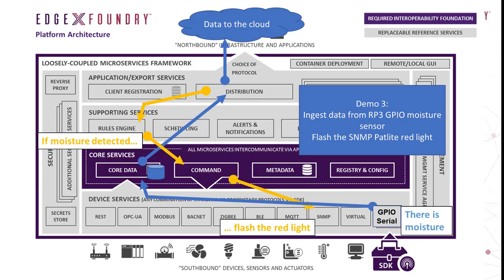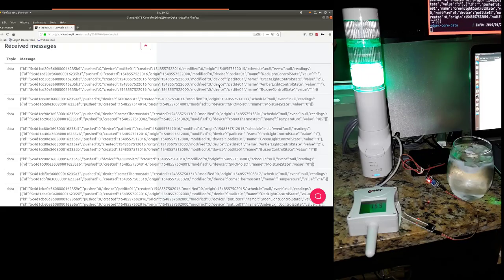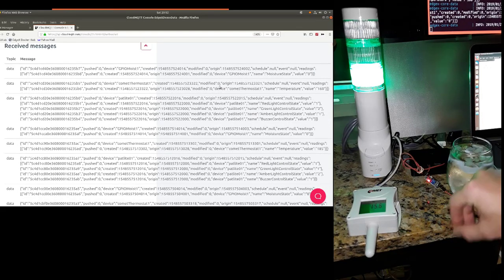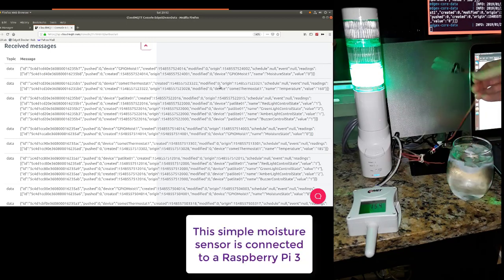In this last sensor demo, I put my moisture sensor into water. Another device service on the Raspberry Pi 3 is monitoring that and detecting when there is moisture. So when it reports moisture to the rest of EdgeX, the rules engine flashes the pat light's red light.